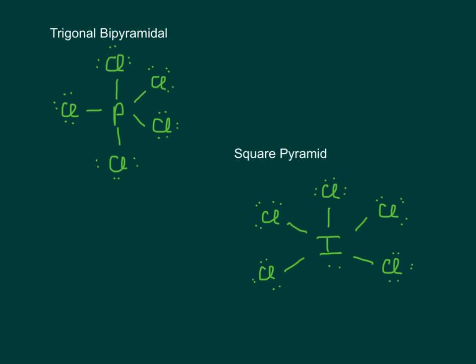Trigonal bipyramidal. I don't know if you can tell, but top and bottom cancel, and then these three around the middle all cancel each other out. So trigonal bipyramidal is very symmetrical, and it's nonpolar.